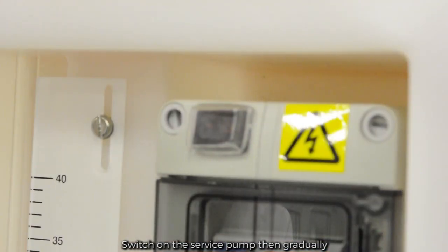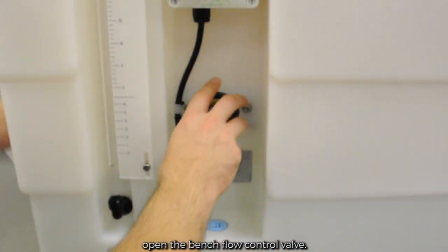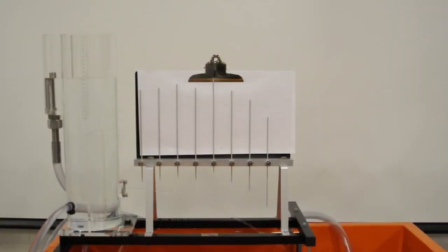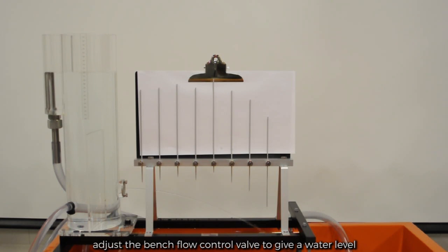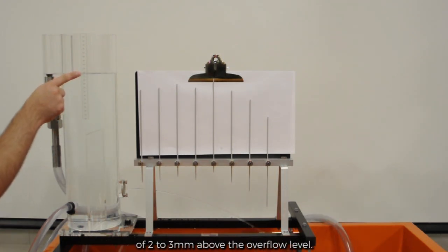Switch on the surface pump, then gradually open the bench flow control valve. When the water level in the header tank reaches the top of the overflow tube, adjust the bench flow control valve to get a water level of 2 to 3 millimeters above the overflow level.